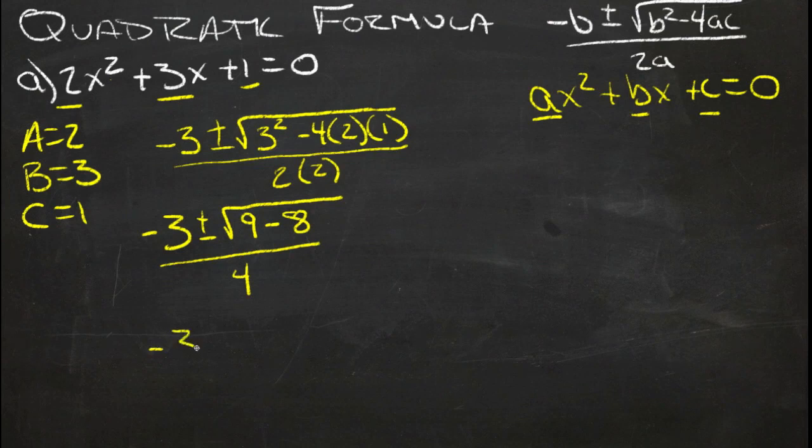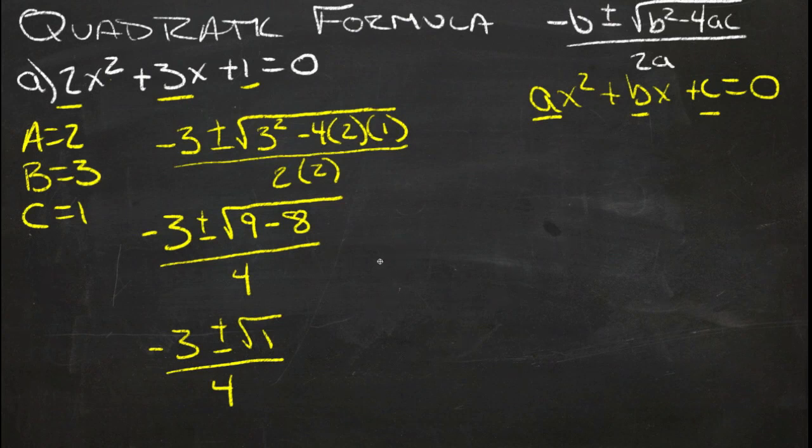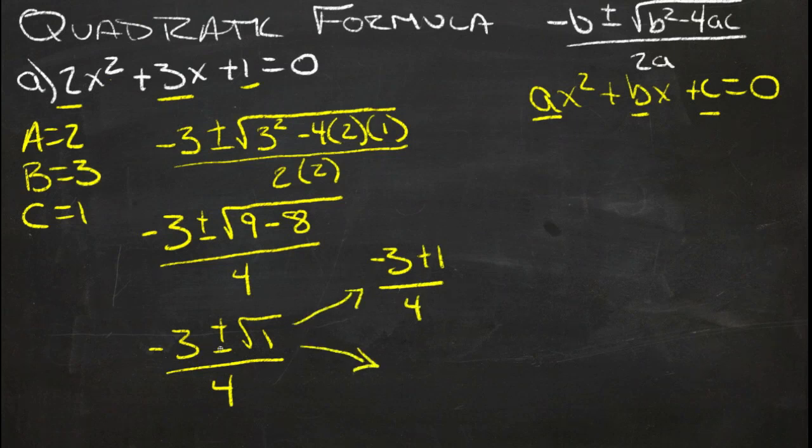So now we have negative 3 plus or minus the square root of 1 over 4, which gives us two possibilities. We have negative 3 plus the square root of 1, which is of course just 1, so we have negative 3 plus 1 over 4, or we have negative 3 minus the square root of 1, since obviously there's two roots of 1. Negative 3 minus 1 over 4.